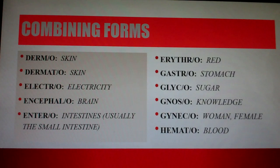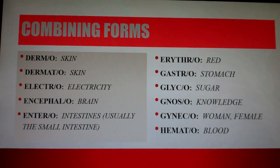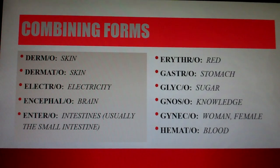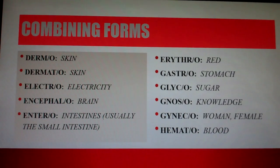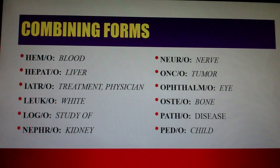More combining forms: Dermo and Dermato both mean skin. Electro means electricity. Encephalo — not to be confused with Cephalo which means head — Encephalo means brain. Entero means intestines, usually referring to the small intestines. Erythro means red. Gastro means stomach. Glyco means sugar. Gyno means knowledge. Gyneco means woman or female. Hemato means blood. Hemo also means blood. Hepato means liver.